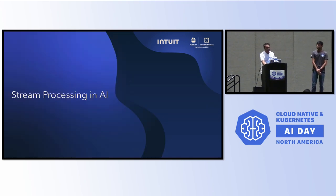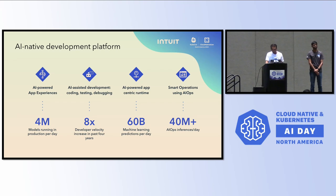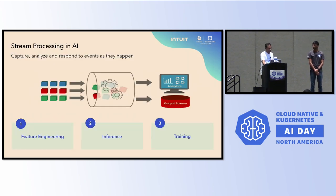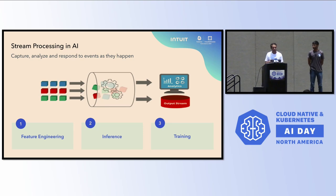Let me talk about stream processing in AI. To give you a sense of the scale we operate at — this is our AI native development platform. We do millions of models running in a day and make around 40 million inferences. Stream processing in AI is about getting data from an unbounded stream — mostly users coming in and operating on Intuit products — then doing feature engineering, inference, and using some of it back for training. This data is used for things like personalization.